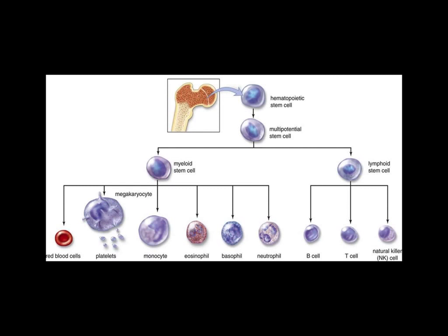Myeloid stem cell versus lymphoid stem cell — what should you look for on your USMLE or COMLEX? If it is a myeloid leukemia, you're going to see a predominance of neutrophils. If it's a lymphoid leukemia, you're going to see a predominance of lymphocytes. Lymphoid means lymphocytes, myeloid means neutrophils. Because myeloid stem cells can also become red blood cells and platelets, you might see overgrowth of platelets and red blood cells on a CBC.